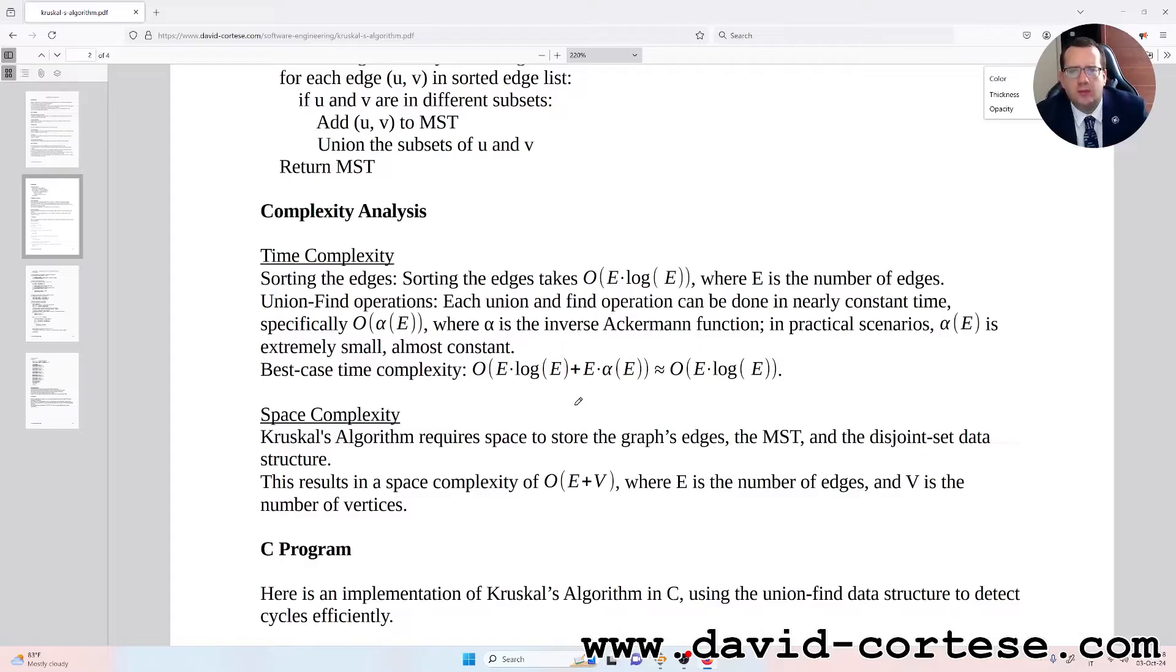Union find operations. Each union and find operation can be done in nearly constant time. Specifically O of alpha E where alpha is the inverse Ackermann function. In practical scenarios alpha V is extremely small, almost constant.